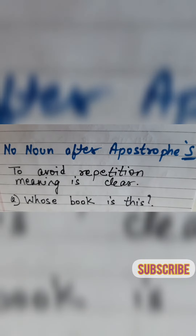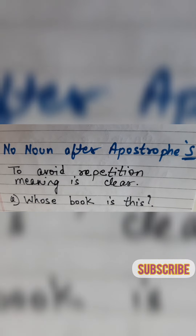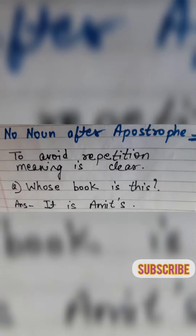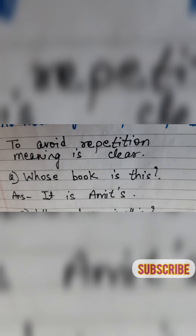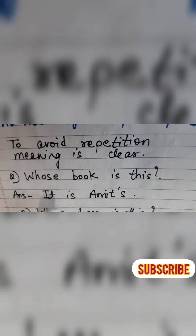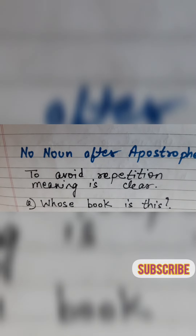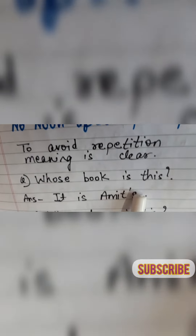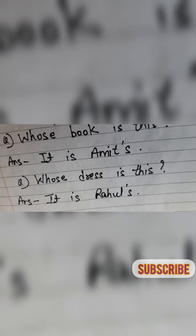There are also cases with no noun after apostrophe S — to avoid repetition when the meaning is already clear. For example, if someone asks 'Whose book is this?' I can simply say 'It is Amit's' — I don't need to say 'Amit's book' again. Whose dress is this? It is Rahul's. I don't need to repeat 'Rahul's dress' because the meaning is understood. In such situations we still use apostrophe S, but we don't repeat the noun again.